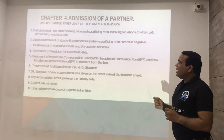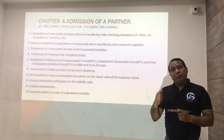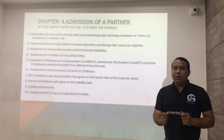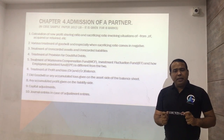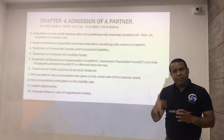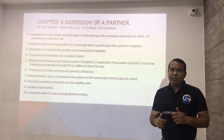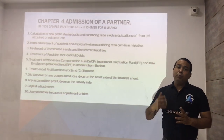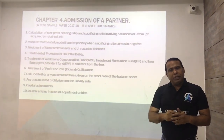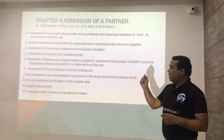The second treatment is for goodwill when the sacrifice ratio is negative. In that case, the goodwill entry will be different. The illustration goes from cash to capital to premium, and then premium to the partners. If we have a negative sacrifice ratio, then partner B will be debited because they have become the gaining partner, and the amount will be the total goodwill of the firm multiplied by the gaining share.